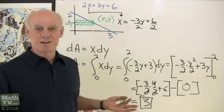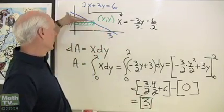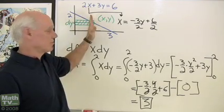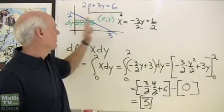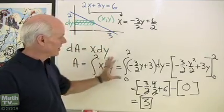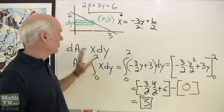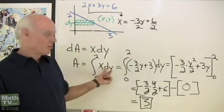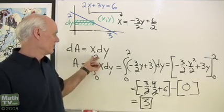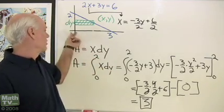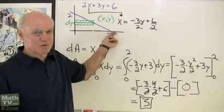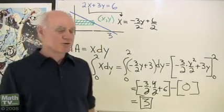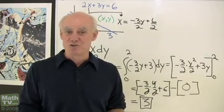Sure enough, I get the same area as before. I can integrate either way — test rectangles horizontal from 0 to 2 in y, or test rectangles vertical from 0 to 3 in x. Everything is handled in the procedures: solve for x or y, substitute back in. Either case works out just fine. So there's an introductory look at finding areas using integration.